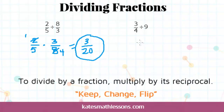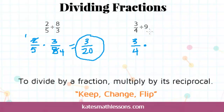Let's look at the second one. If we use this same expression — keep, change, flip — we keep the first fraction the same. That's always your starting amount, don't change that number. We're going to change it from division to a multiplication problem, and we need to multiply by the reciprocal. If it's not written as a fraction, in order to find the reciprocal, you need to first write it as a fraction. 9 can be written as a fraction by just putting it over a 1. 9 divided by 1 is just 9, so the reciprocal of this second number is 1 over 9.